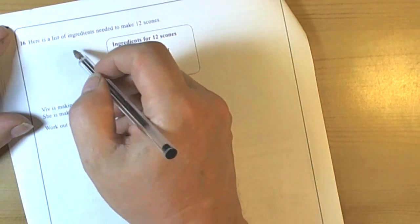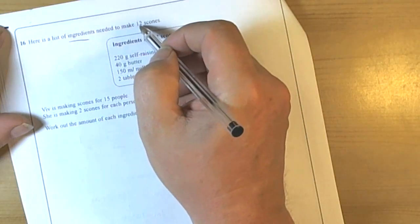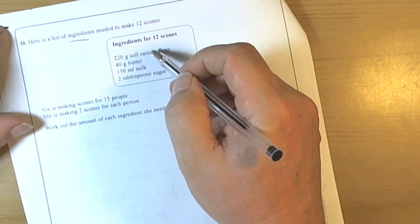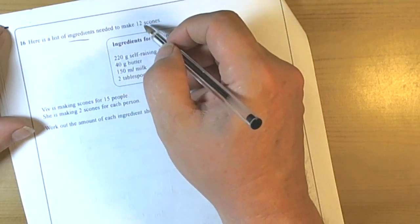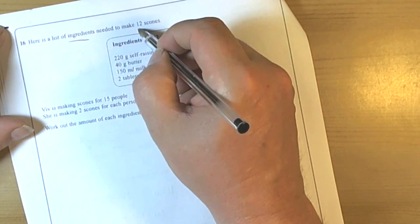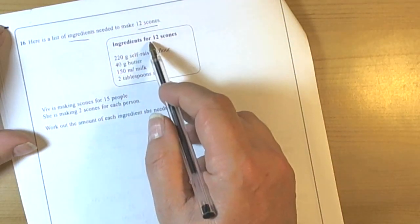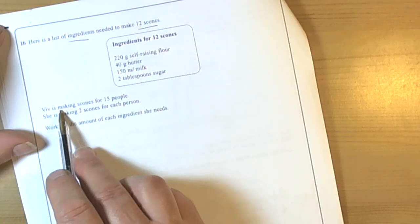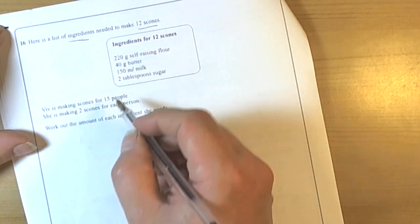This question is looking at ingredients. It's got a recipe, kind of a ratio recipe question here, because we're looking at a recipe for 12 scones. Again, we read all the information carefully. Viv is making scones for 15 people, so that's important.